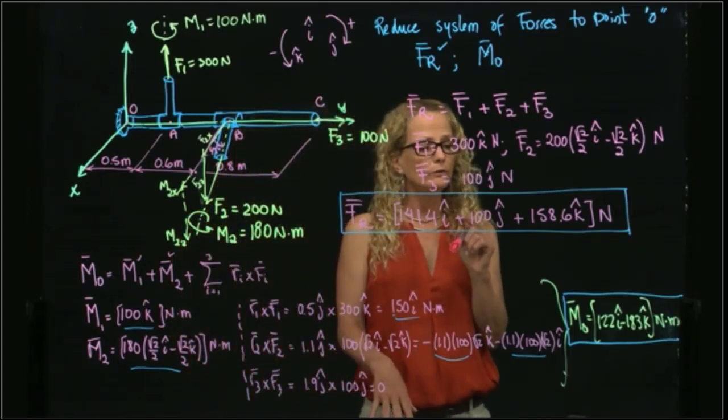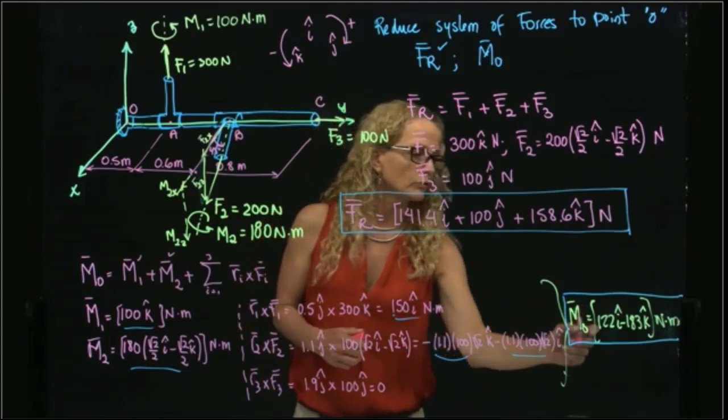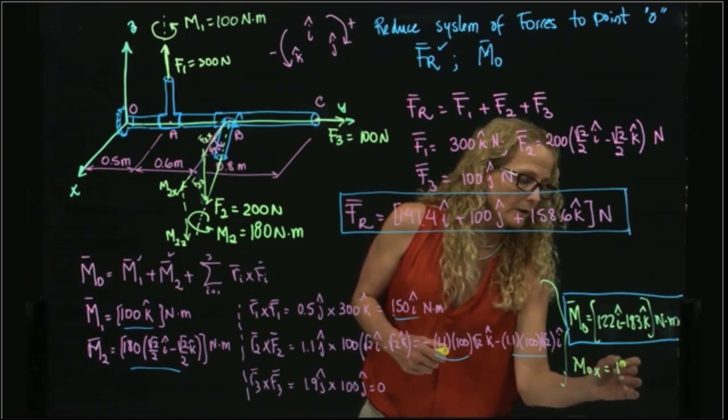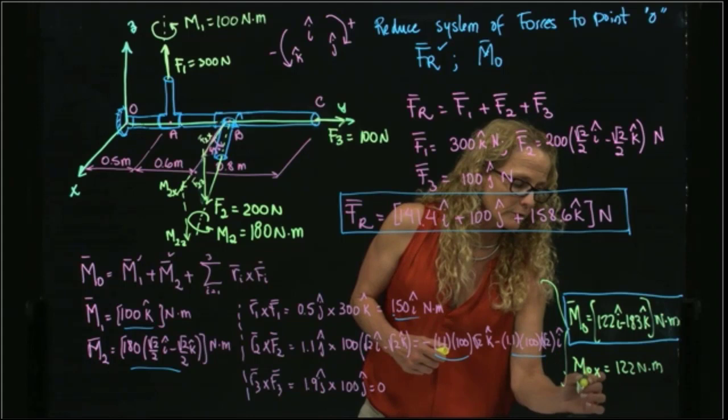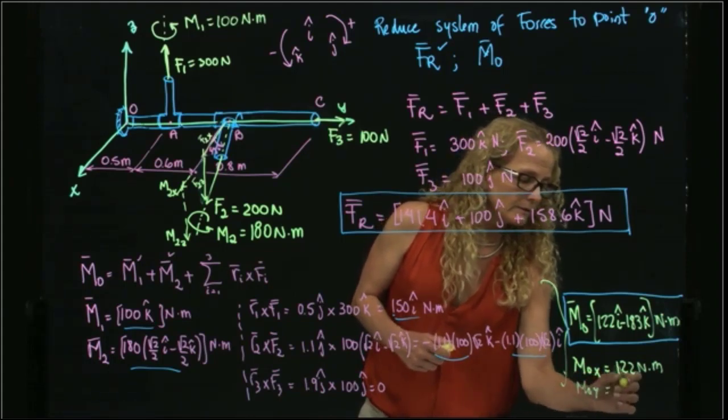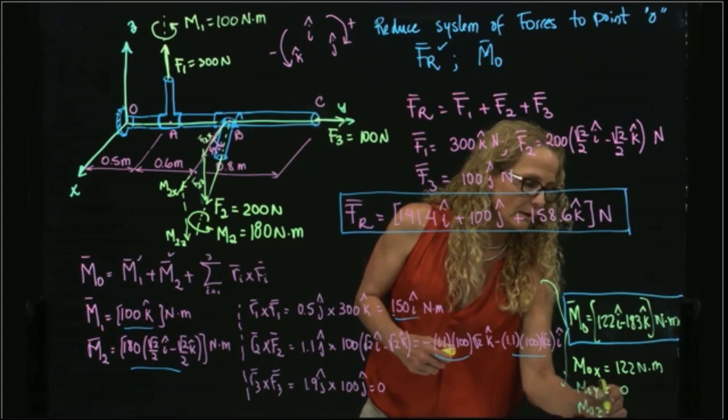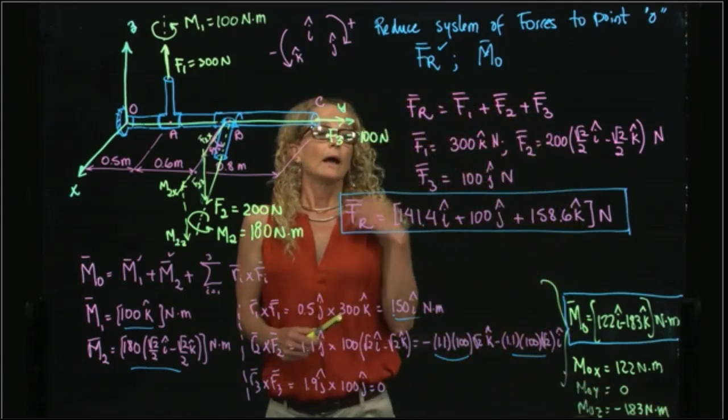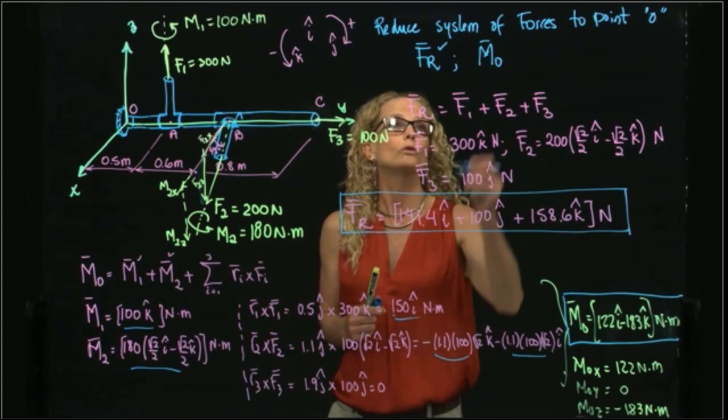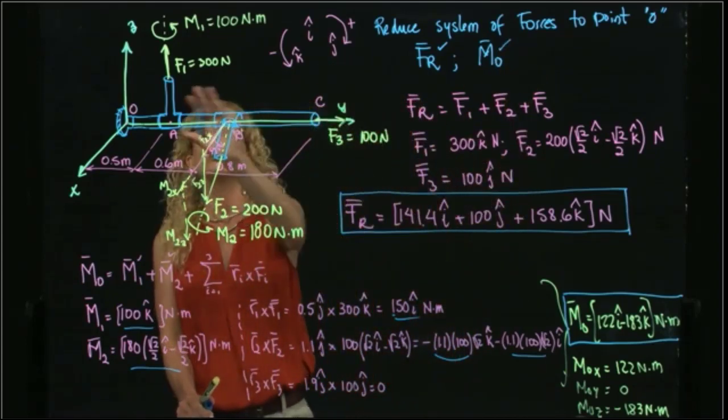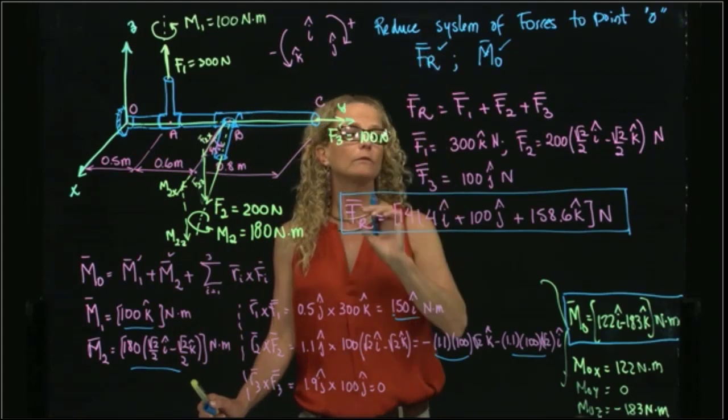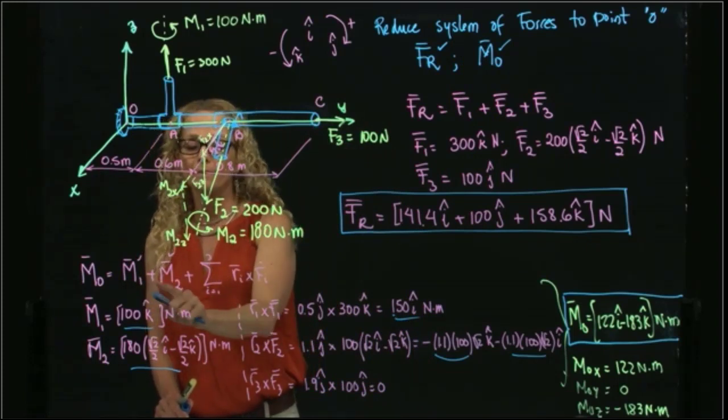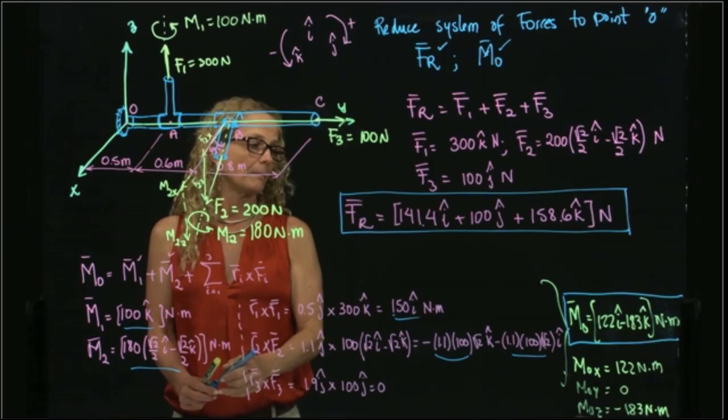And the other question that they ask us, what will be, as you see, if we want to decompose this moment, moment with respect to axis x is 122 newton meters, moment with respect to axis y is 0, and moment with respect to axis z is equal to negative 183 newton meters. And that is what it means to reduce the system of forces and moment to point O. We found the resultant force, and we found the moment that all the forces produced, but we have to add the moments that are applied to the system as well. Thank you.